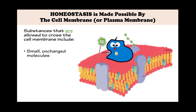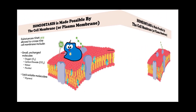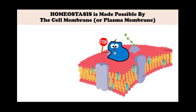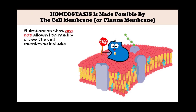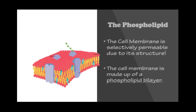Substances that are allowed to freely cross the cell membrane include small, uncharged molecules like oxygen, carbon dioxide, water, and ethyl alcohol. Also, lipid soluble molecules such as glycerol can freely move across the plasma membrane. Substances that cannot readily cross the cell membrane include larger molecules such as amino acids, simple sugars, and charged ions like sodium, potassium, and chloride.